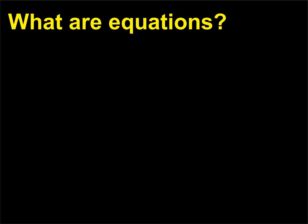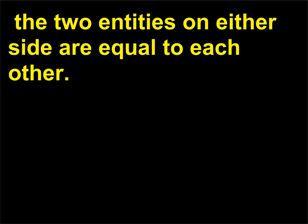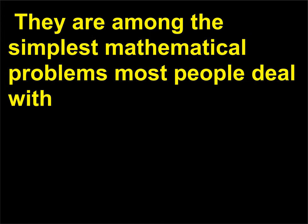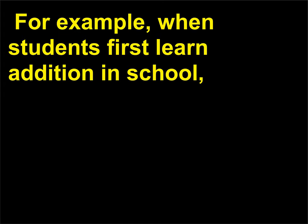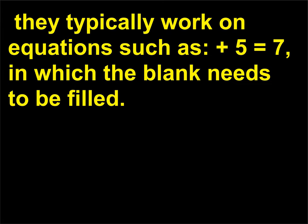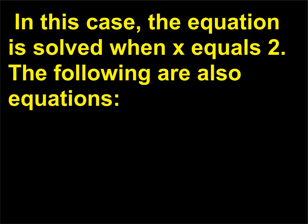What are equations? In its simplest form, an equation is represented by expressions written with an equal sign in between. The two entities on either side are equal to each other. They are among the simplest mathematical problems most people deal with. Most people have solved equations in their daily lives without realizing it. For example, when students first learn addition in school, they typically work on equations such as _ + 5 = 7, in which the blank needs to be filled. This could also be expressed as X + 5 = 7, a simple equation — solved when X = 2.